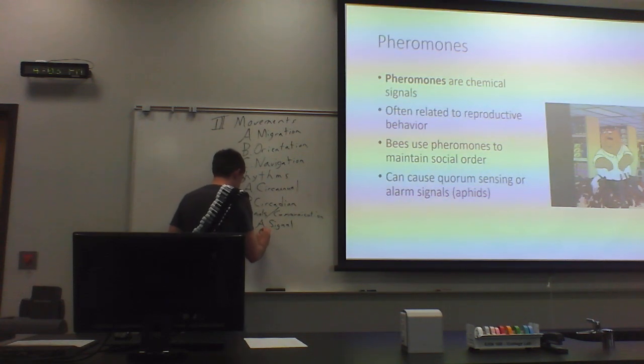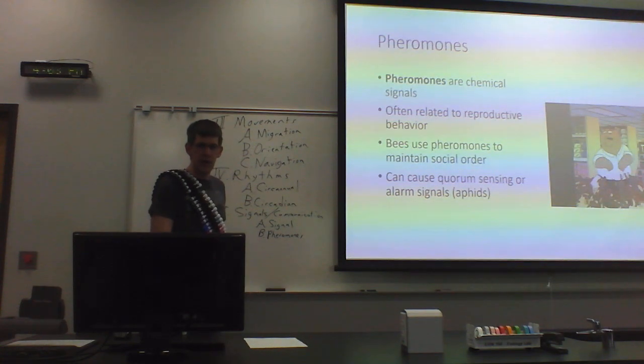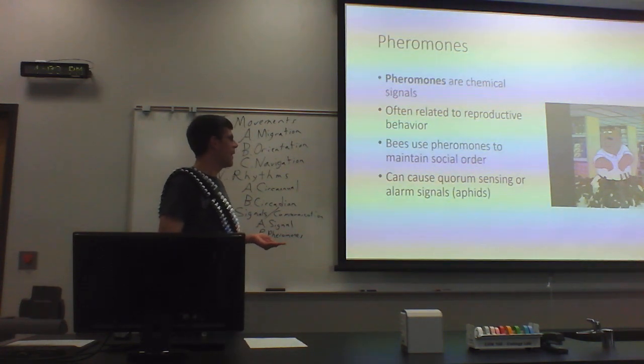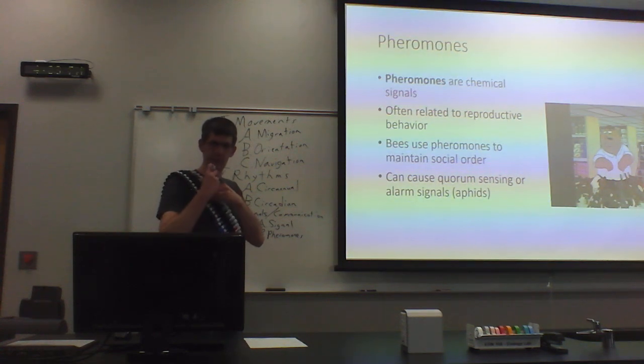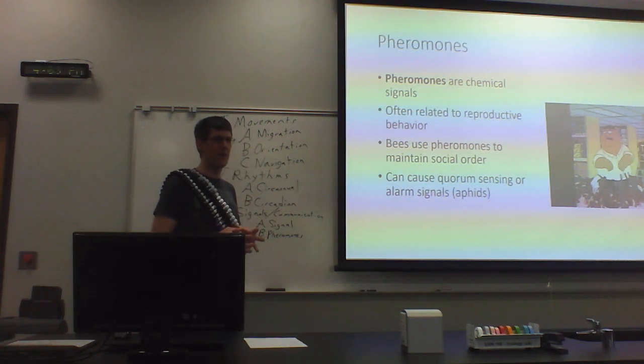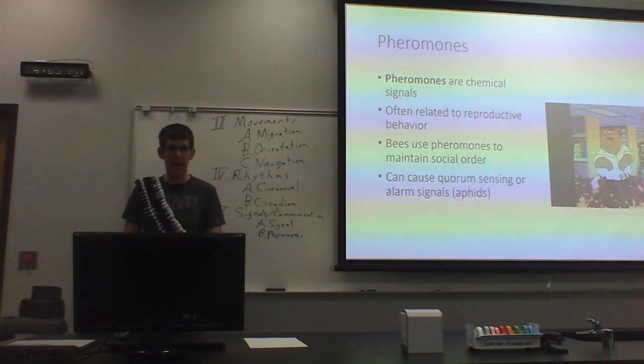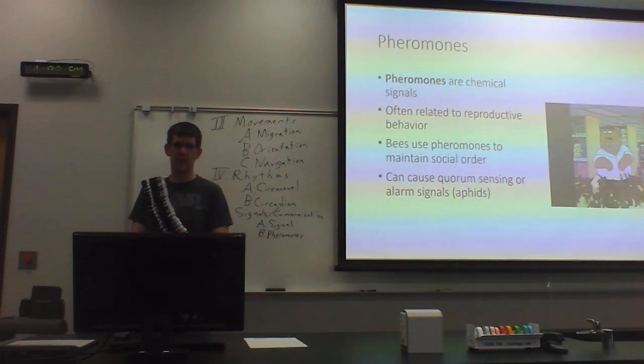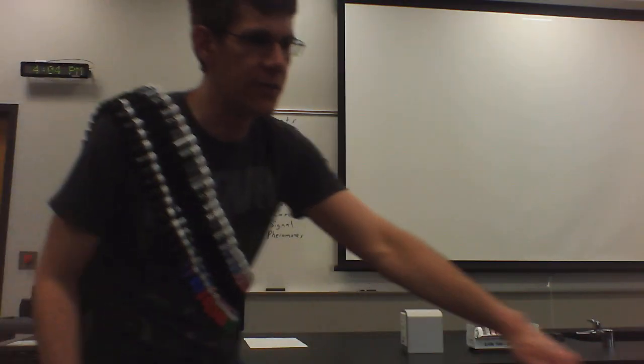Pheromones. Pheromones are chemical signals. You can think of a pheromone as a hormone but instead of within an organism it's between organisms. Often pheromones are related to reproduction. Bees can use pheromones to maintain social orders. Aphids use pheromones for alarm signals. An aphid will release a pheromone when there is a wasp or another predator nearby. Aphid will release a pheromone that alerts the other aphids to basically panic. A group panic pheromone exists in aphids. That's pheromones and that's our basic sensory inputs and our very basic introduction to animal behavior.